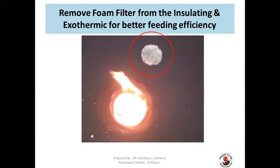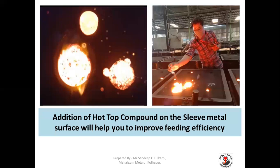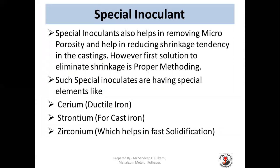Remove the foam filter from insulating or exothermic sleeves after pouring for better feeding efficiency. Additionally, hot top powder or hot top compound can be used on the sleeve metal surface to improve feeding efficiency. You can see a picture of a person putting a small amount of hot top powder on the metal surface in the sleeve after pouring and after removal of the filter.